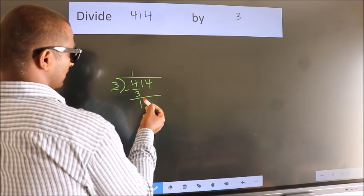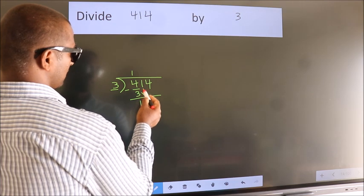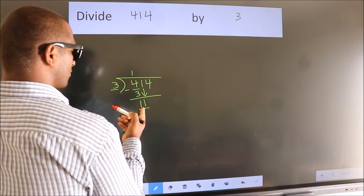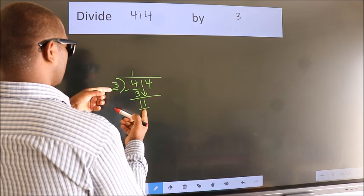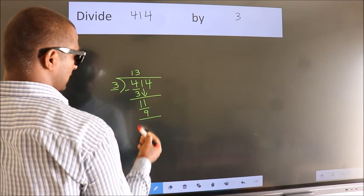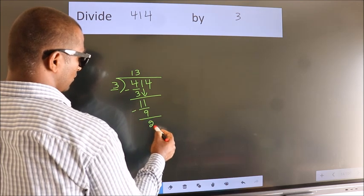After this bring down the beside number. So 1 down. So 11. A number close to 11 in 3 table is 3 3s 9. Now we subtract. We get 2.